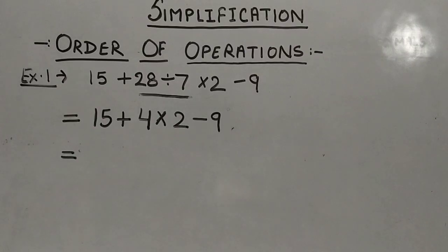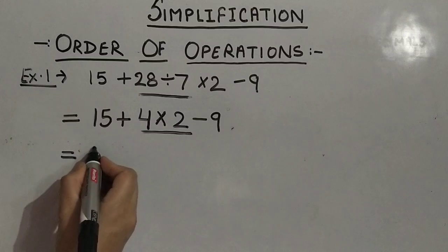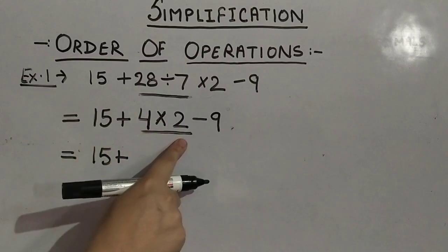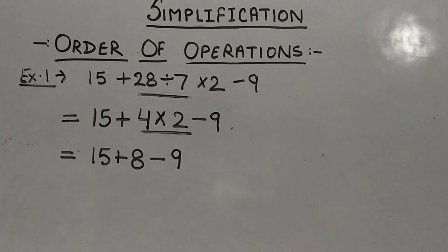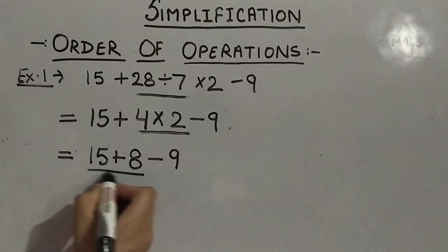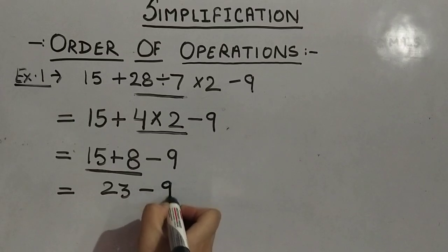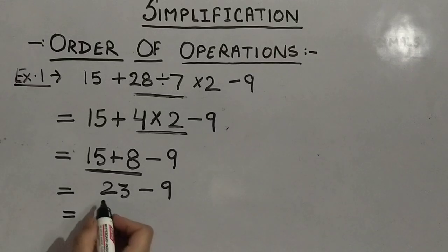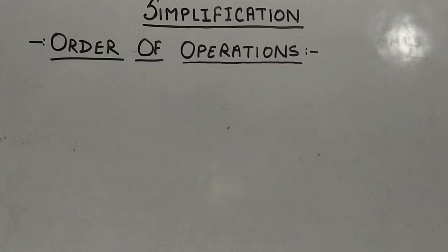After division, the next step in BODMAS is M for multiplication. We underline the multiplication: 4 × 2 = 8. So we have 15 + 8 − 9. Now A for addition: underline 15 + 8 = 23. Finally, the last step is subtraction: 23 − 9 = 14. So the answer is 14. This is how we follow the order of operations.